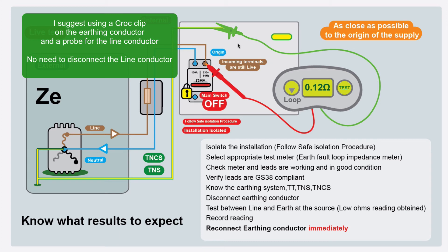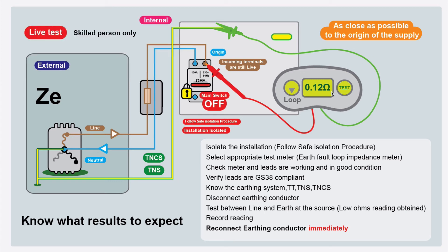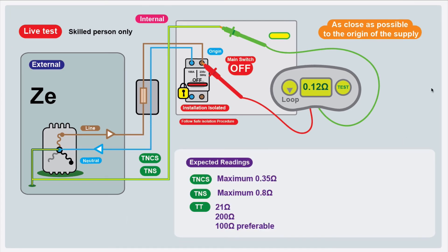Select an appropriate earth fault loop impedance meter set on the right setting. Check the meter is working, leads are in good condition and GS38 compliant. Know what kind of earthing system you've got and what results to expect. Then disconnect the earthing conductor, test between the line and the earth with your meter, record your reading, and — before doing anything else — immediately reconnect the earthing conductor. Don't walk away; as soon as you finish the test, reconnect the earthing conductor so the safety systems are back in place.